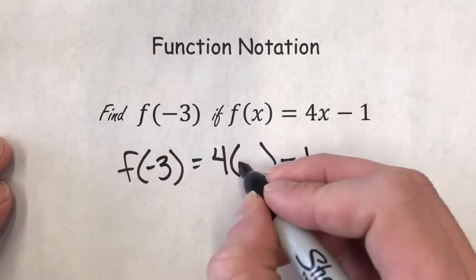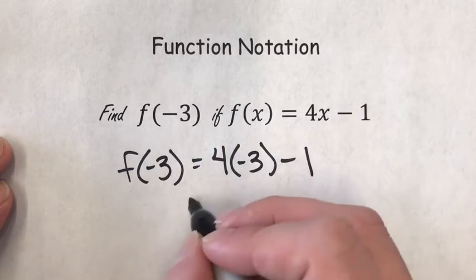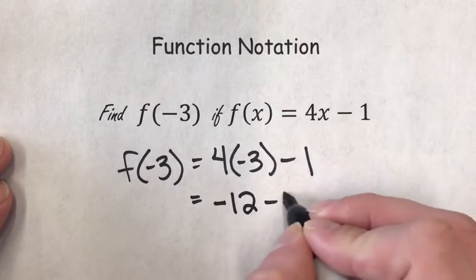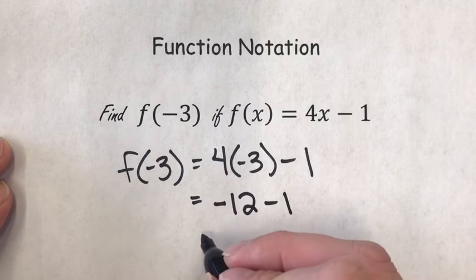So here are the bubbles. Now what I do is just do the math: 4 times negative 3 is negative 12, negative 12 minus...